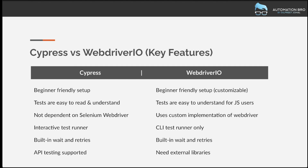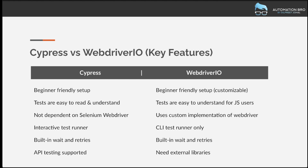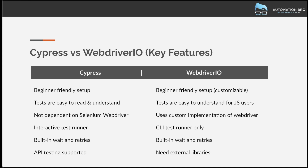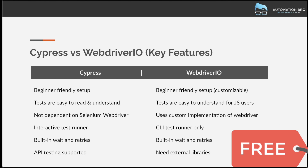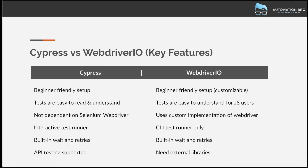The next thing is API testing. Cypress has default support for API testing — it provides HTTP requests you can use right away. With WebDriver.io, it's not natively supported, but you can use external libraries like Axios or Supertest. Finally, WebDriver.io is 100% free versus Cypress, which is only partially free, and that can make a huge difference when picking a framework.